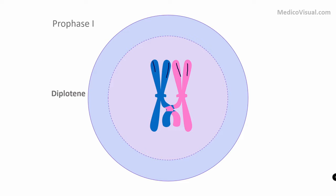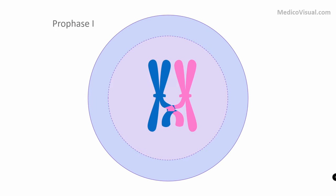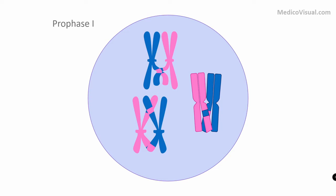After Diplotene, they further move apart from each other, and this is called Diakinesis — 'kinesis' means movement, like kinetic energy. In Diakinesis, the nuclear membrane is also lost so that in subsequent phases — metaphase and anaphase — they can be easily separated from each other. Here we don't have just a single couple but 23 couples, of which I have shown three. They are still attached at the chiasma.